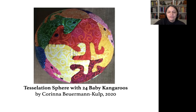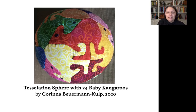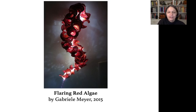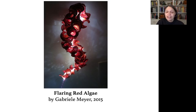There are many ways to use fiber arts to express mathematical ideas. This quilted sphere by Karina Boyermann-Kulp shows an adorable tessellation of a sphere by 24 identical kangaroos. Crochet has become a popular way to create models of hyperbolic space. Gabriela Meyer creates monumental sculptures using yarn and light.